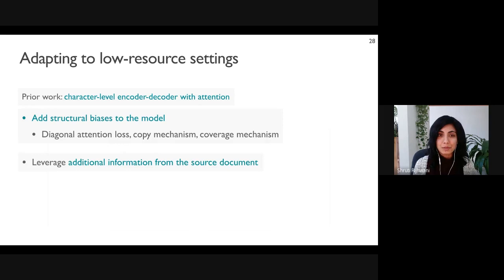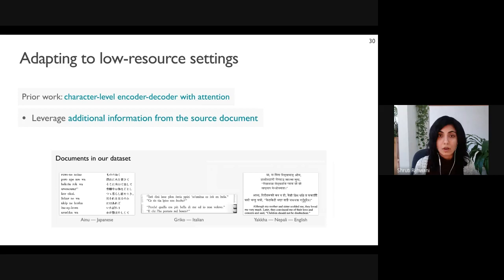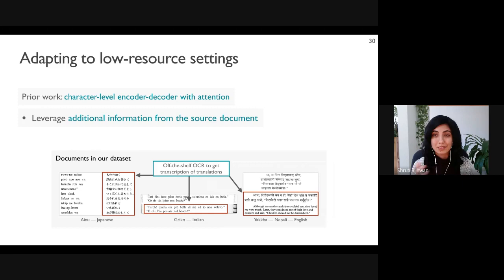We also leverage additional information from the source document. Many documents containing text in a low-resource language also contain a translation of that text — translations are often found in interlinear glosses, dictionaries, and linguistic documentation. In the documents in our dataset, the Ainu poetry book contains a Japanese translation, the Greco book has translations in Italian, and the Yakha texts have translations in Nepali and English. We can apply an off-the-shelf OCR tool to get transcriptions from the scanned images of these translations, which are typically in higher-resource languages and thus of high quality.